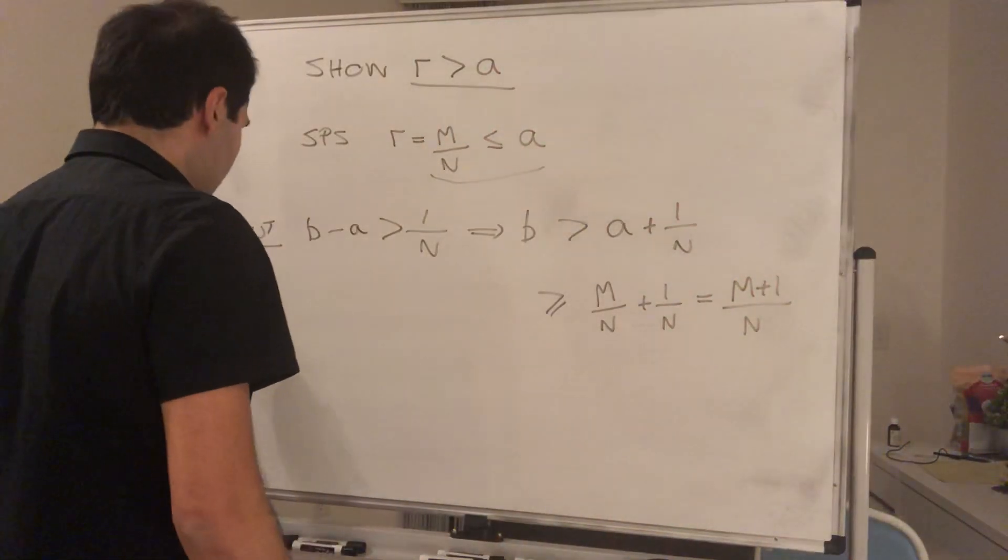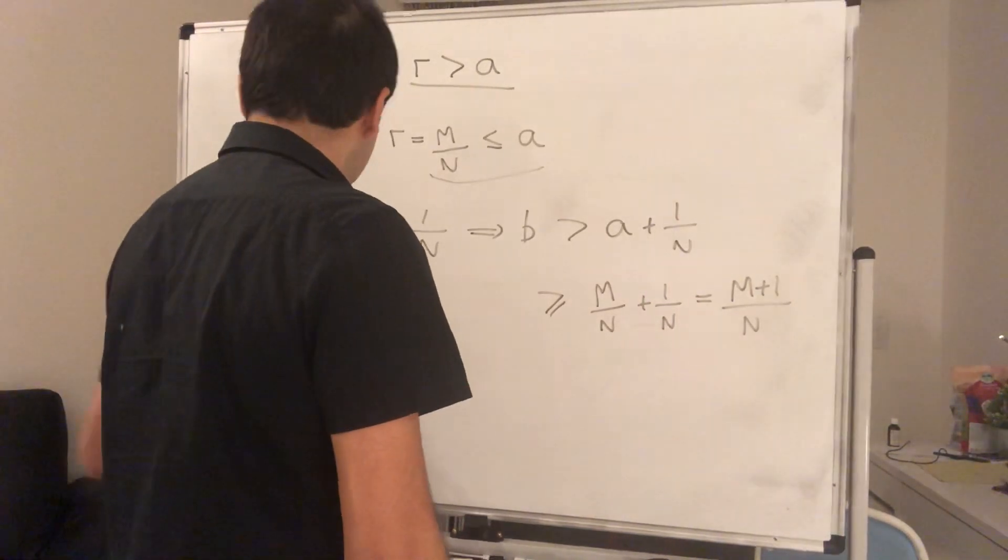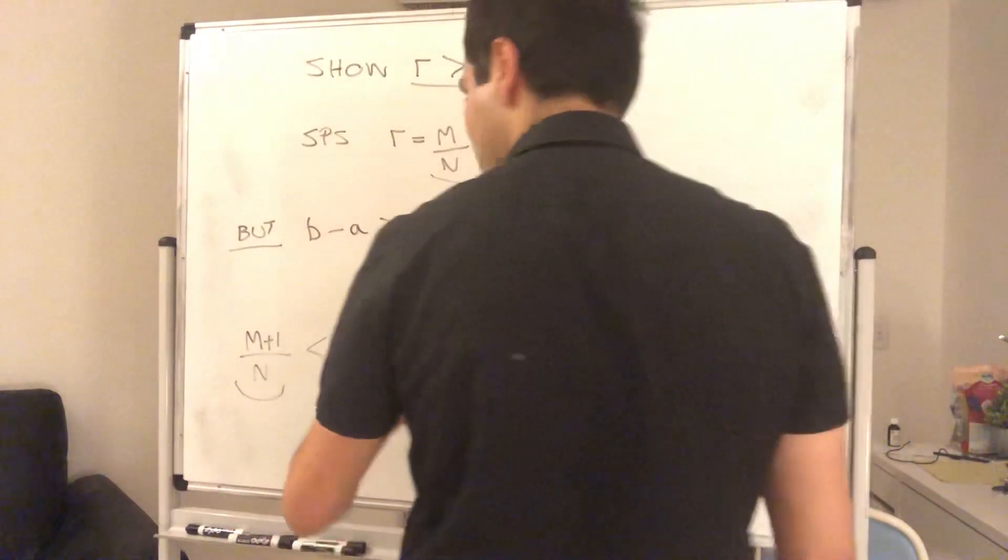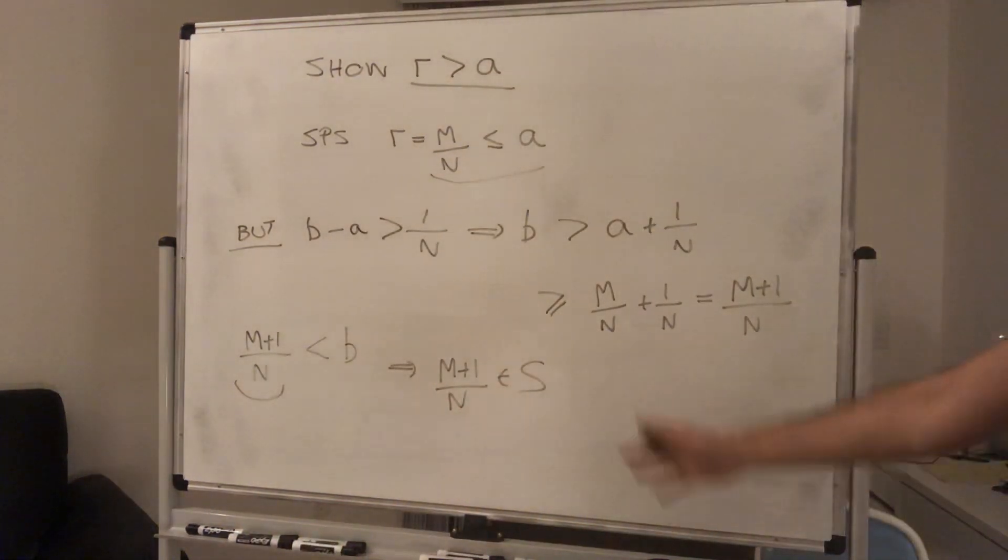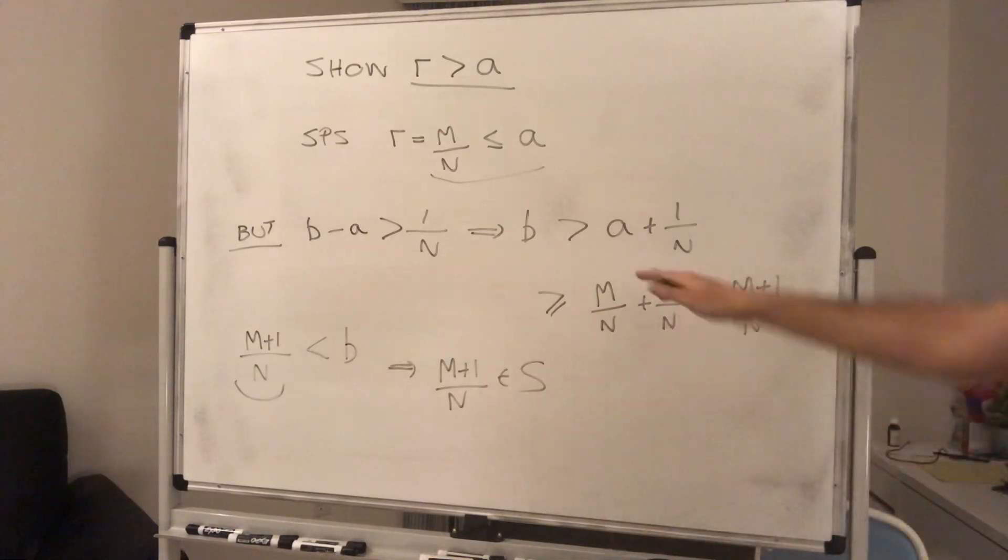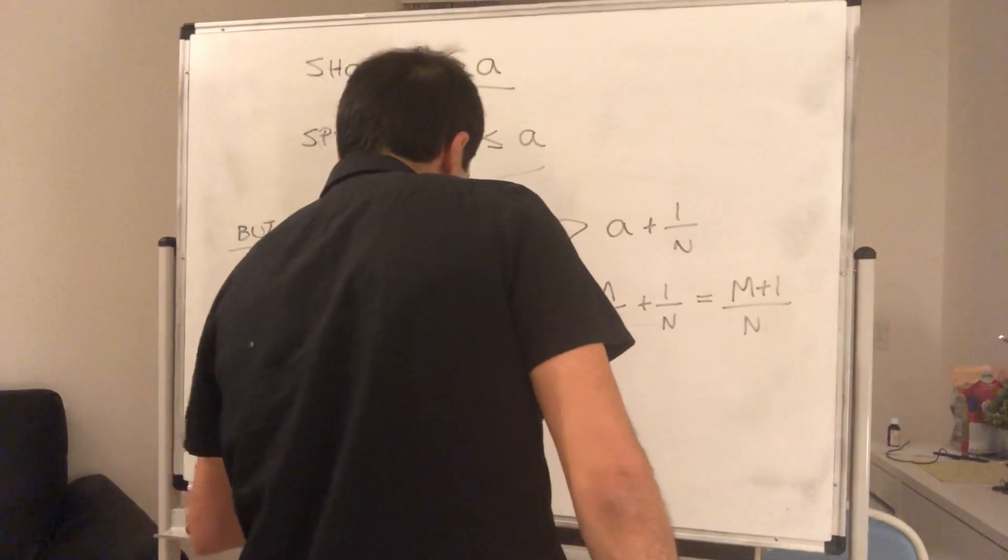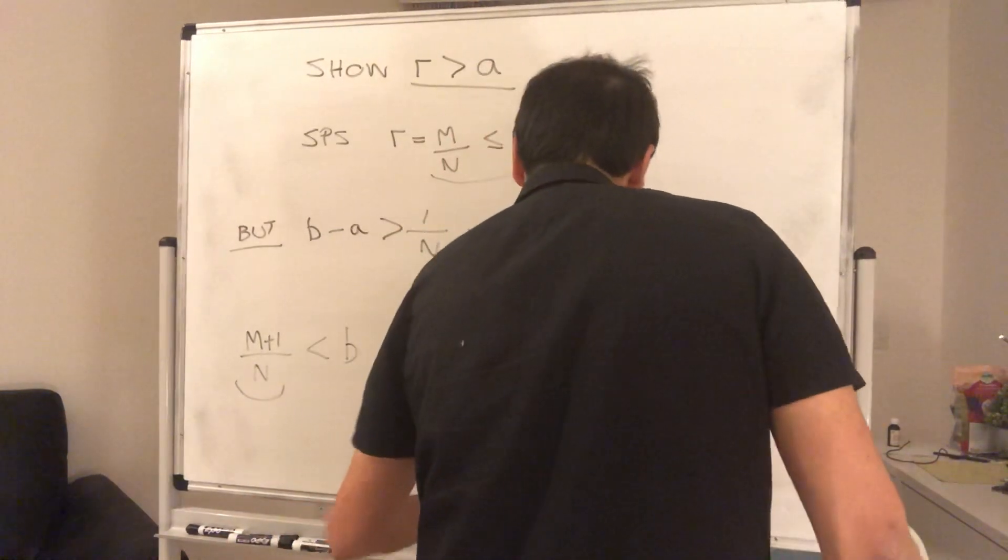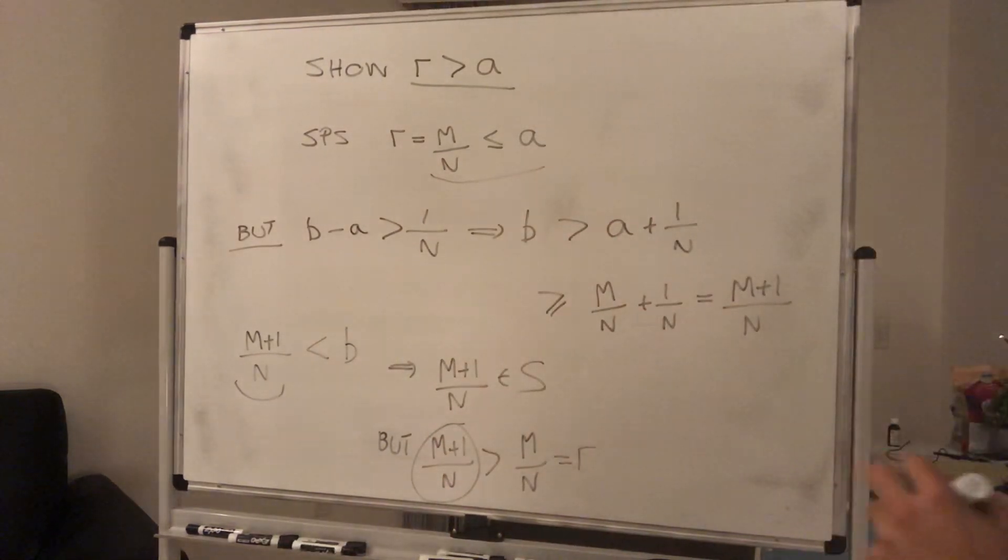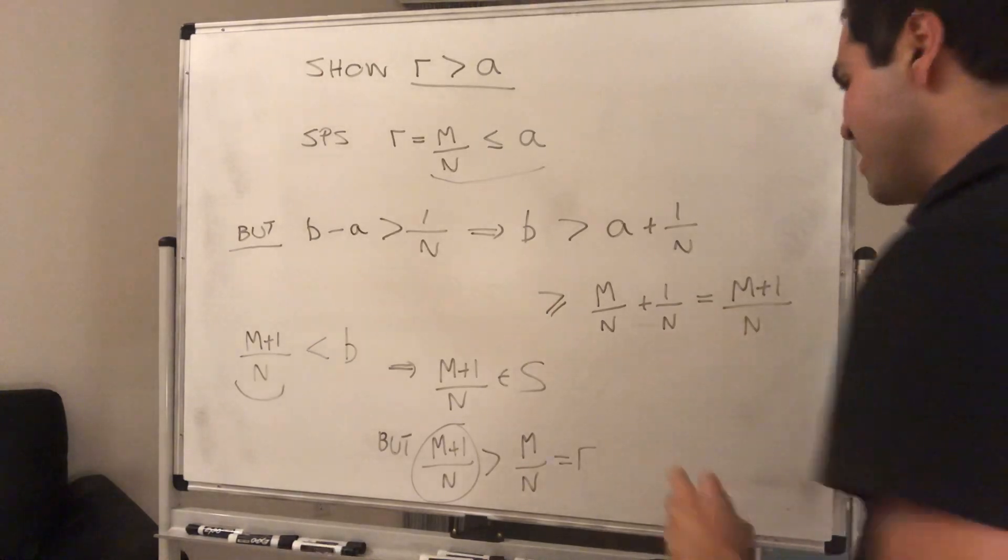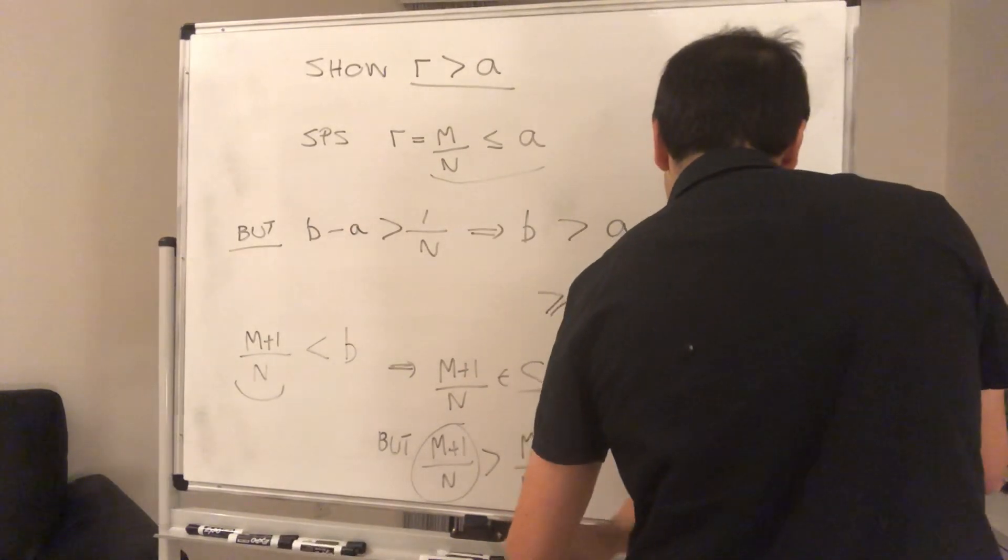So what do we know? We know m plus 1 over n. Yes, it's of the form something over n. And it's strictly less than b. So m plus 1 over n is actually in S. But look, what have we found? We found an element in S that's bigger than r. So, but, what do we know? m plus 1 over n is strictly greater than m over n, which is r. So in other words, again, you found an element of S that's bigger than r, but that contradicts the fact that r is the biggest, r being the maximum of S.